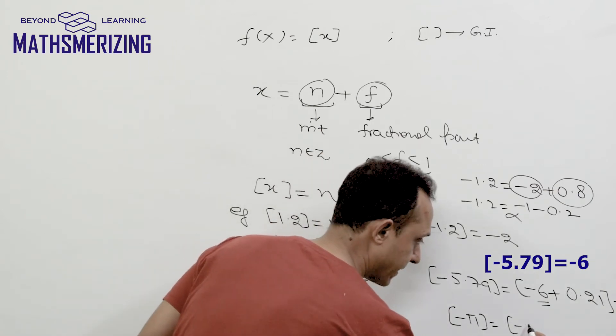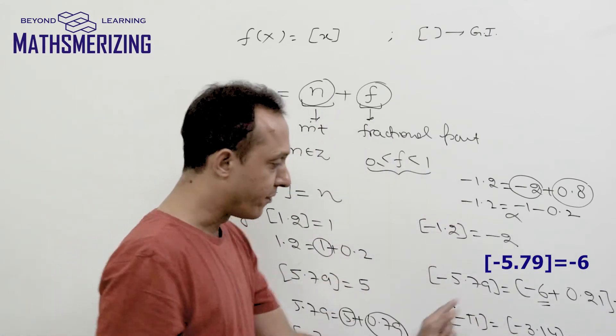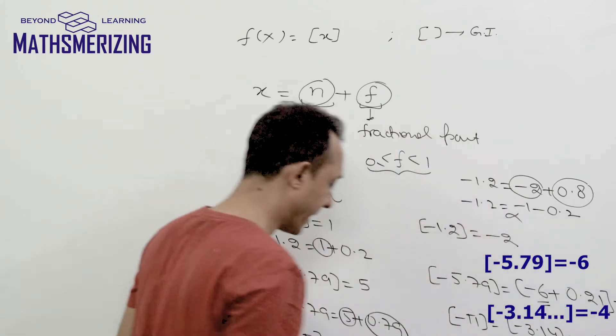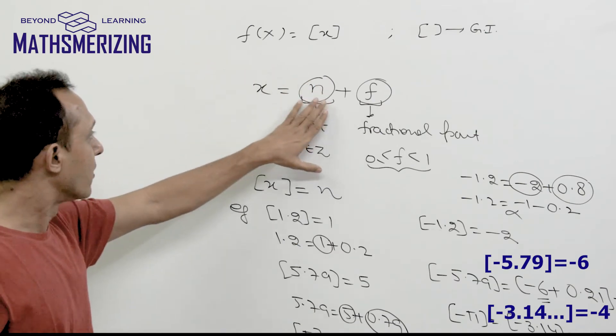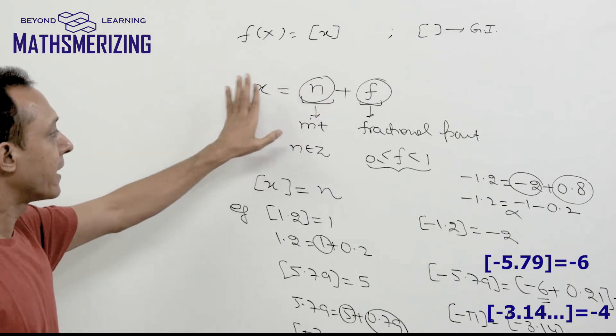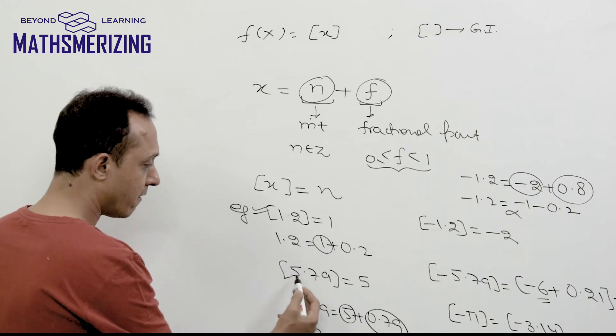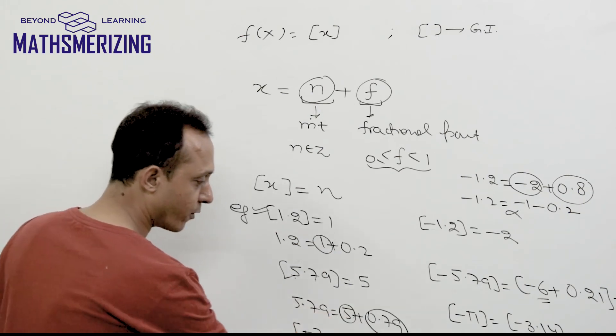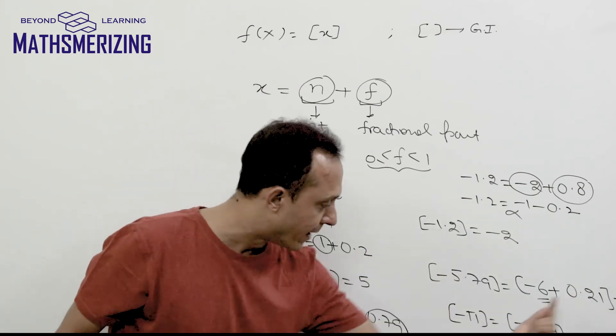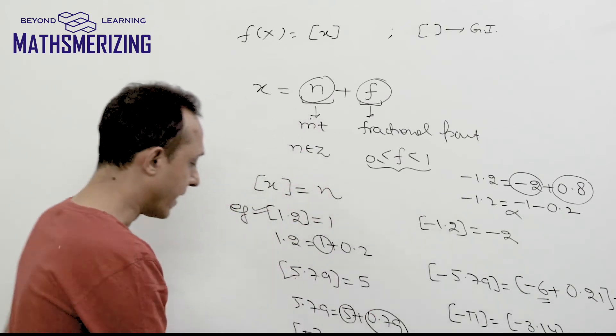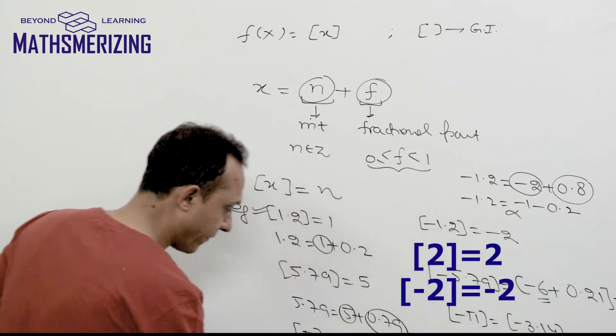What about -3.14? Because it is -3 point something, its greatest integer function will be simply -4. So essentially, greatest integer function gives you the integral part of any given real number x. If the number is positive with a fraction like 1.2 it'll be 1, 5.79 it's 5, pi (3.14) it's 3. For negative numbers, -1.2 then -2, -5.79 then -6, -3.14 then -4. In case it is an integer, then the greatest integer function is that number itself. If it is 2 then it'll be 2, and if it is -2 then it will be -2.